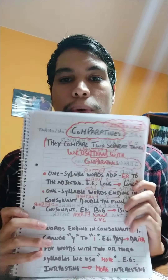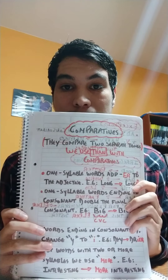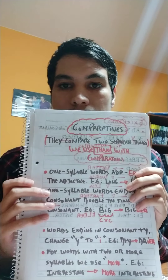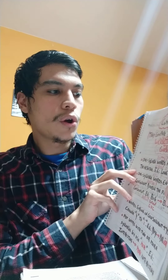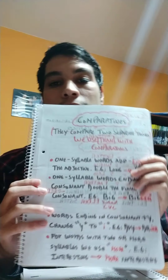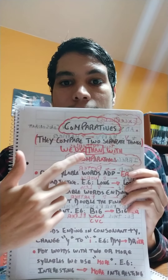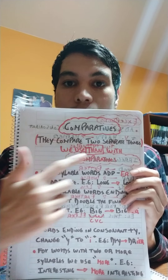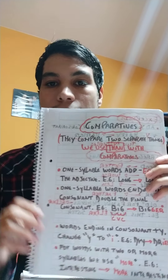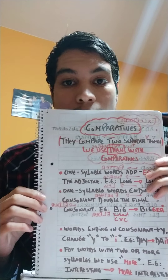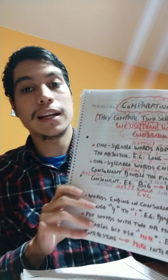Here I have my notebook. Comparatives. They compare two separate things — comparan dos cosas que son separadas. We use 'than' with comparatives. So we have certain rules that we need to follow. Tenemos ciertas reglas que necesitamos seguir.